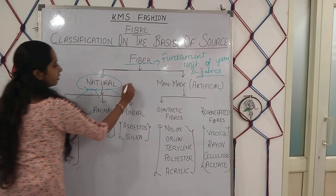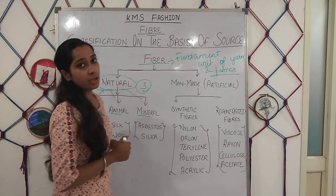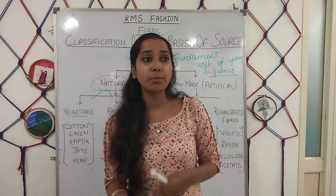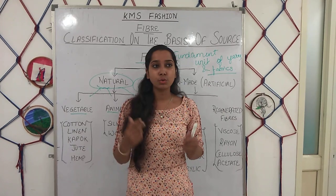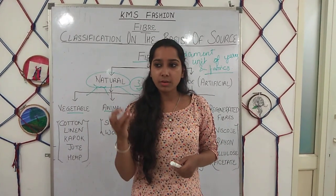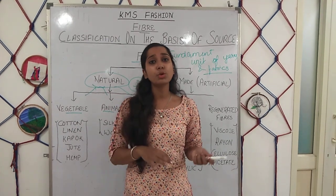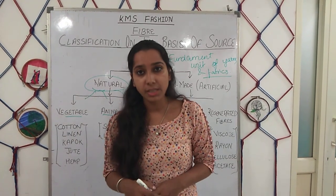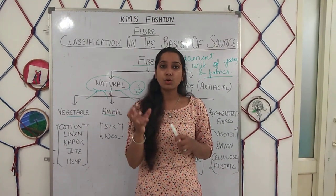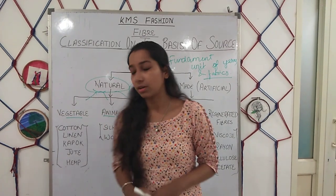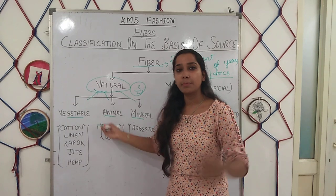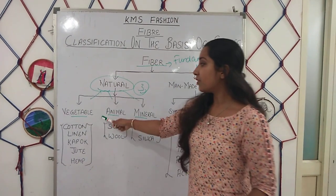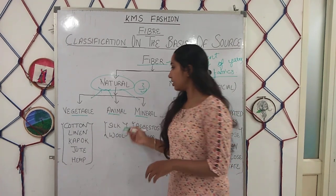In natural fibers, we divide into three types: vegetable, animal, and mineral. Vegetable fibers are given to us by nature through vegetation, through plants and trees — like cotton. When we were small, we saw white pods; those were actually cotton seeds and cotton parts. So cotton comes from bushes and trees. Then linen, coir, jute, and hemp — these are all our vegetable fibers.